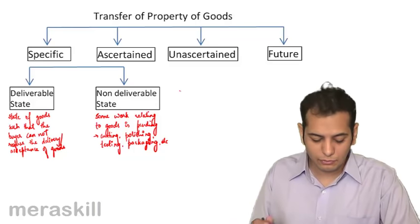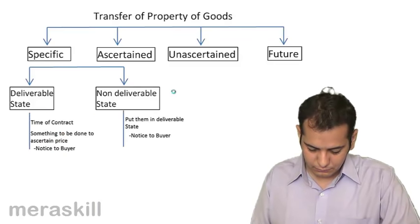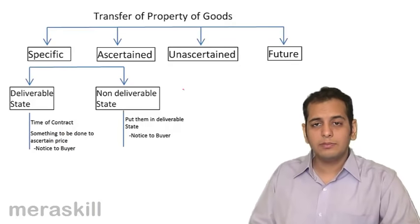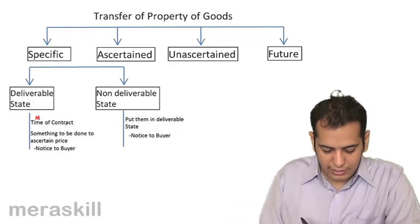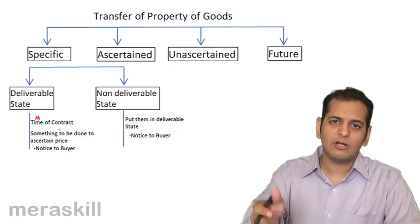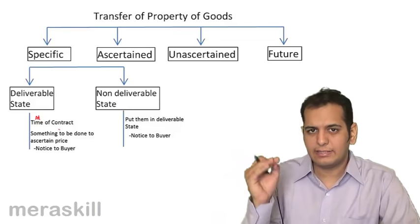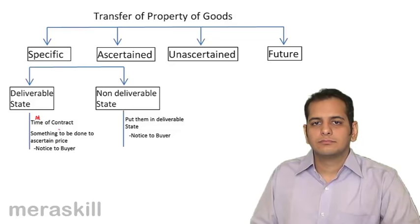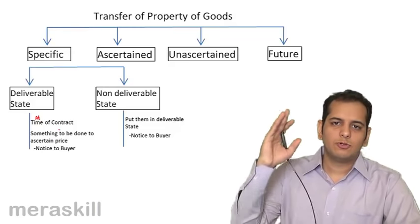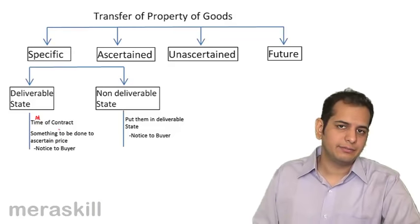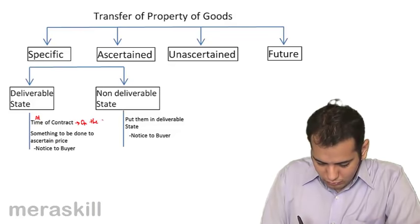When the goods are in deliverable state and they are specific, the property transfers at the time of the contract — the ownership gets transferred there and then, on the spot, immediately.